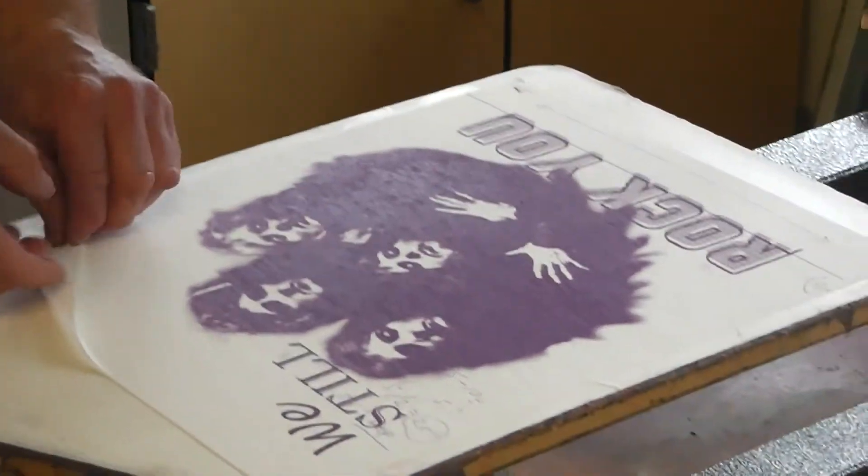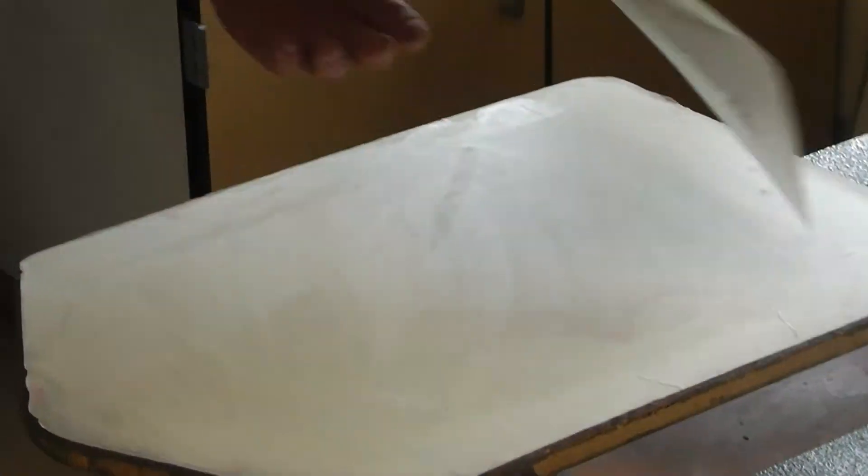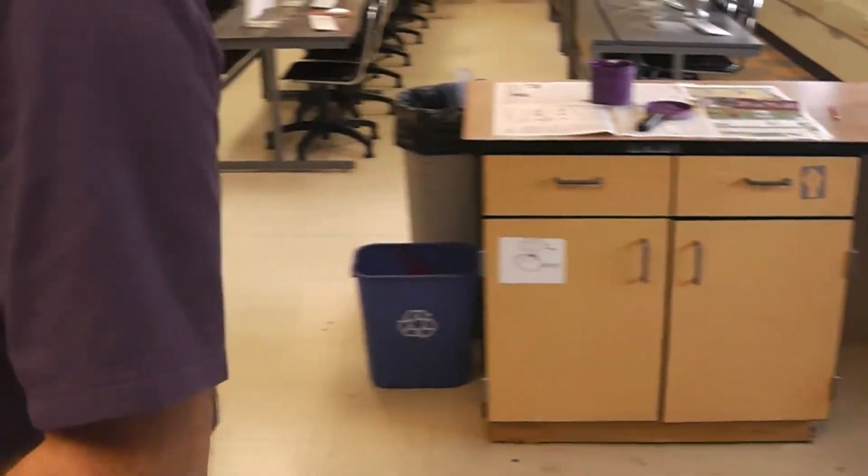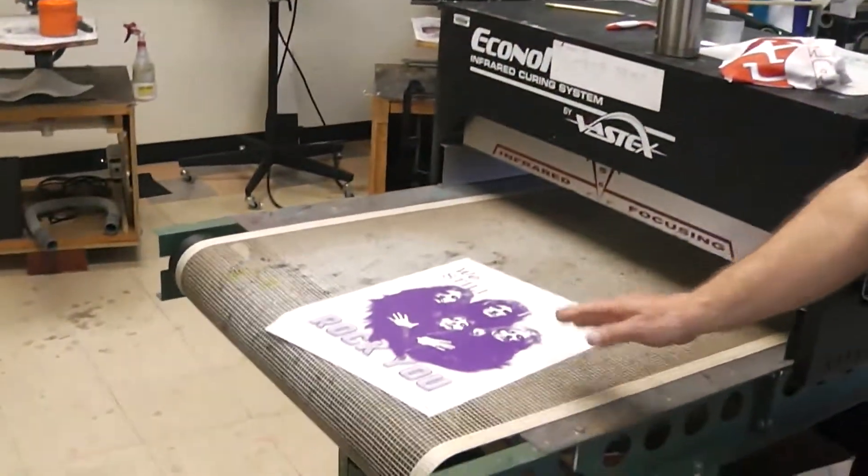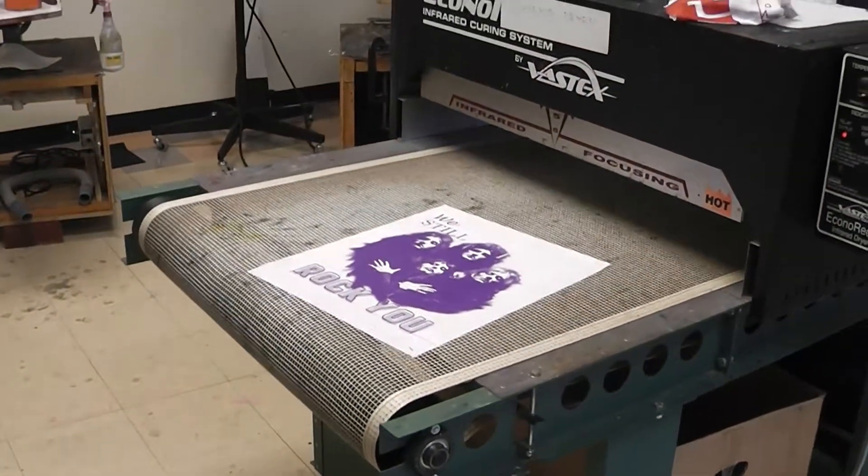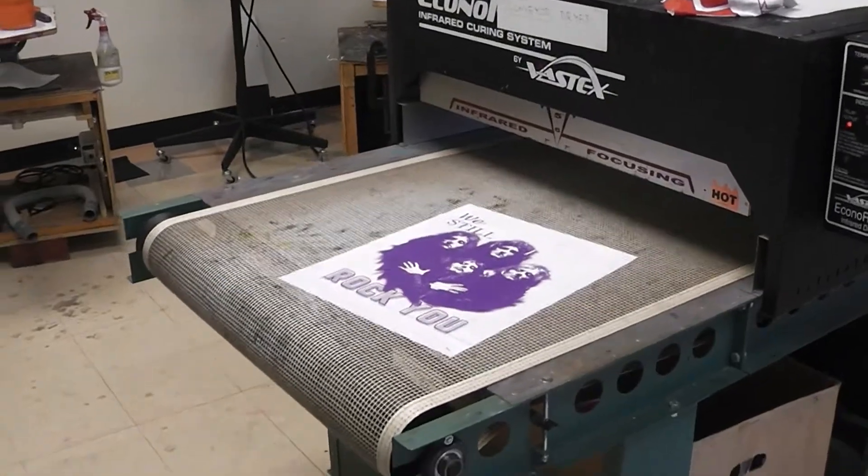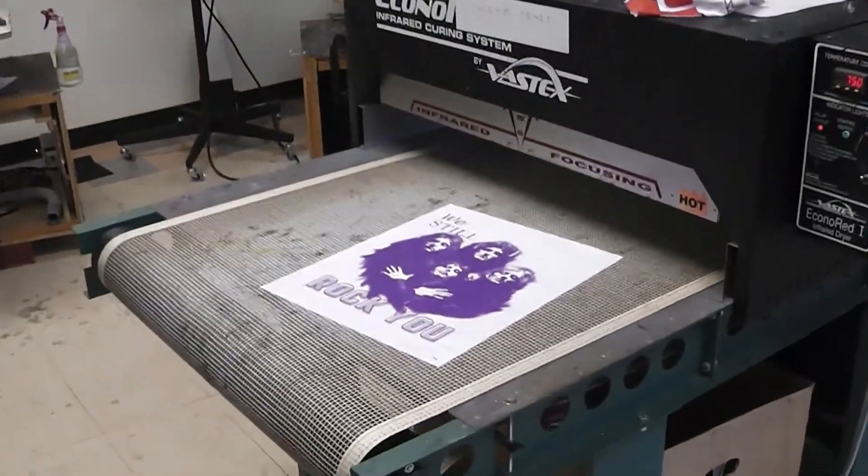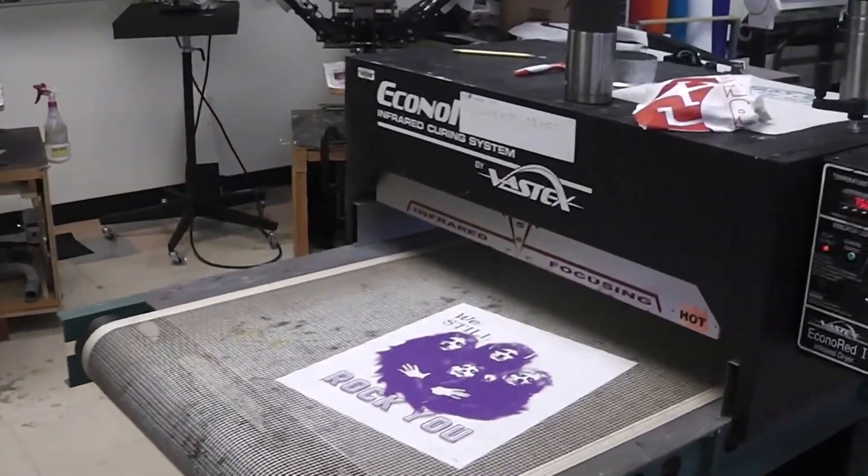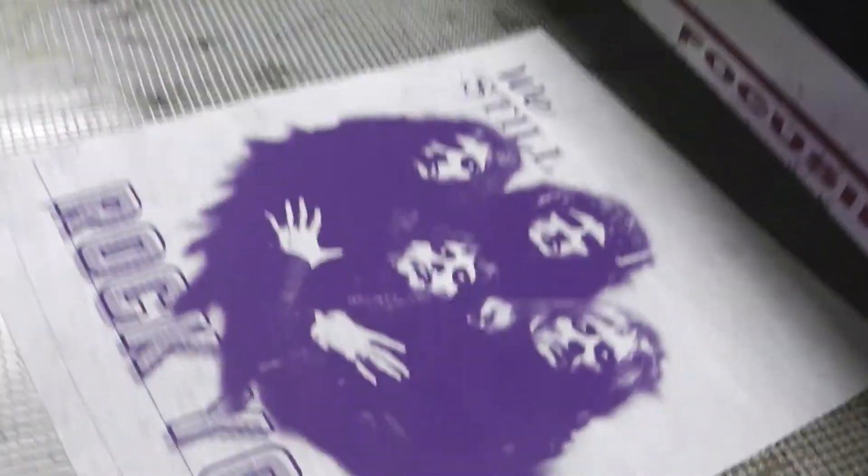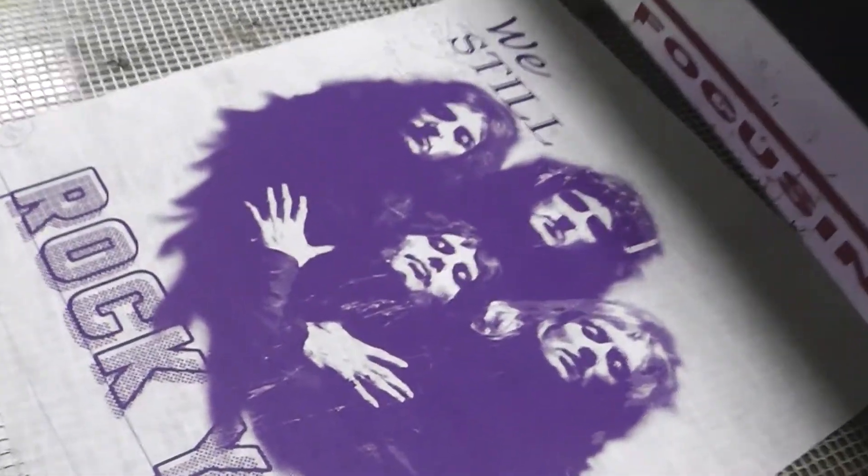Now, I'm going to take this one off. Run it through our dryer. Remember, the plastisol ink never air dries. It has to use 320 Fahrenheit to cure. So you can just let that go through the dryer. And we'll take another test print and load it up.